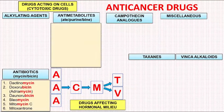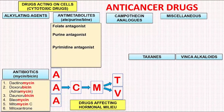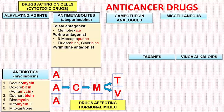Next we fill up the antimetabolites. We have three categories in this group: the folate antagonist, the purine antagonist, and the pyrimidine antagonist. We observe that most of the antimetabolites end with the letters -ate, -purine, or -bine. In folate antagonist, we have a drug called methotrexate — folate and methotrexate sound similar, easy to remember. In purine antagonist, we have 6-mercaptopurine, fludarabine, and cladribine. Purine and 6-mercaptopurine sound similar, easy to remember.